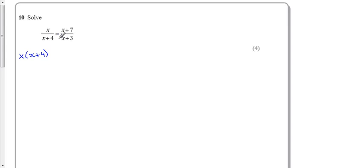So to get rid of that, I'm going to multiply it, or do the inverse. That leaves me with x, because that's going to cancel out to make 1, equals x plus 4 multiplied by x plus 7, and all of this side is divided by x plus 3.